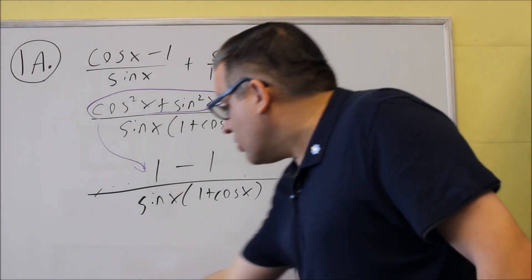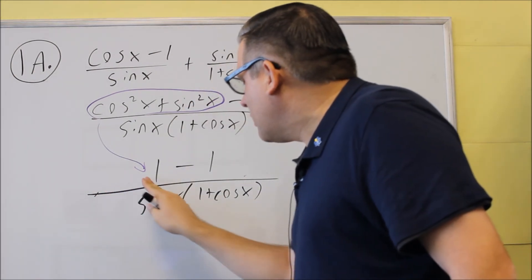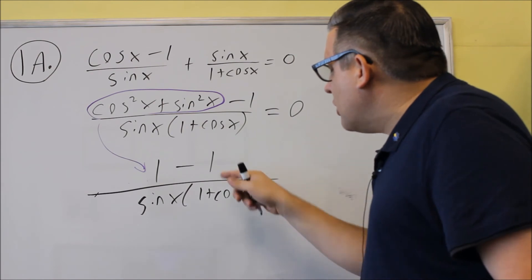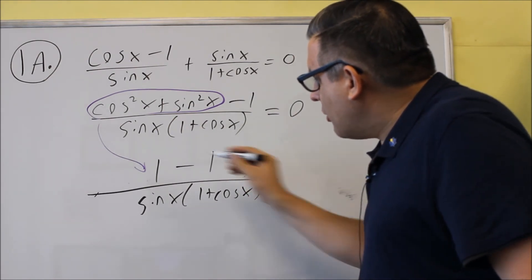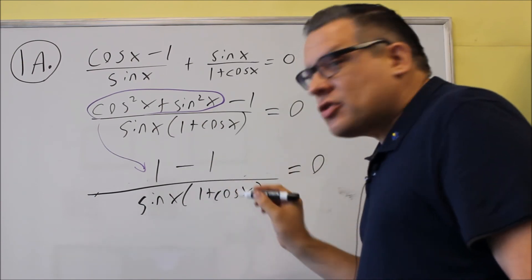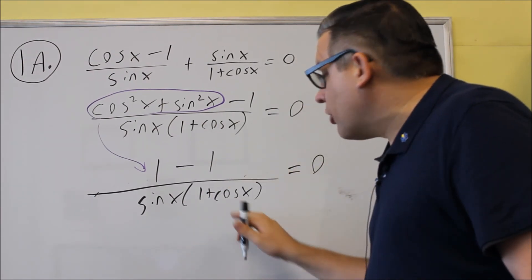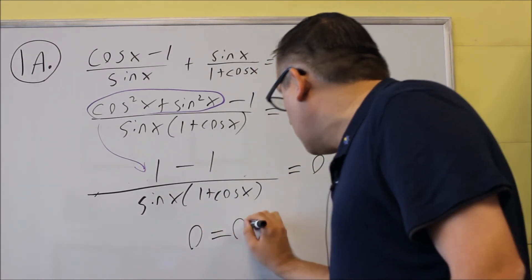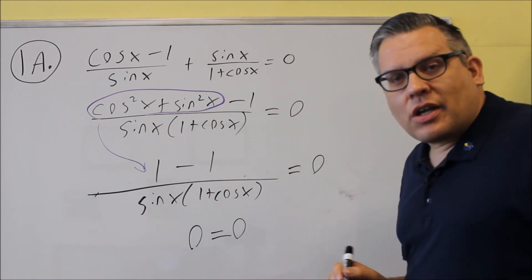So I'm just using the identity for that one. And then because I'm using the identity, these two now I can subtract. And 1 minus 1 is 0. And 0 over the denominator is going to be 0. So I get both sides to cancel out.